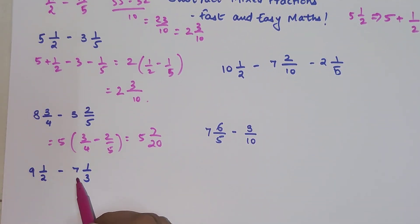Let's do this again. 9 minus 7 is 2, 1/2 minus 1/3. So this is going to be 2, and 3 minus 2 because we're cross multiplying. So 3 minus 2 is 1 divided by 2 into 3 which is 6.